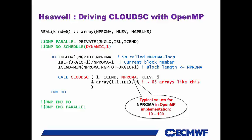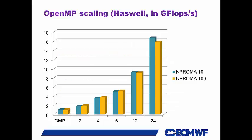This is the scaling result for two slightly different N-proma values. At an order of 10, we get slightly better performance at 24 threads. This Haswell has 24 cores. I didn't try hyper-threading, so I didn't go beyond 28 threads, and I bound all threads to cores. That's gigaflops per second — and we scale.